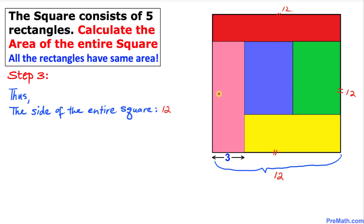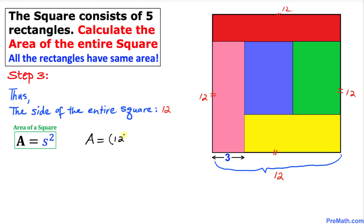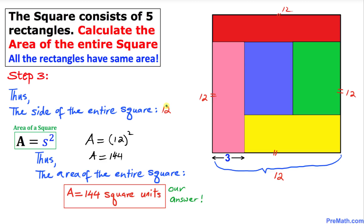Here is the area of the square formula: A = s², where s represents the side of the square. So the area is 12² = 144. Thus the area of this entire square turns out to be 144 square units, and that's our final answer. Thanks for watching and please don't forget to subscribe to my channel for more exciting videos!